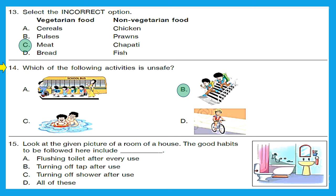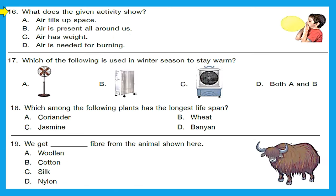Question 15: looking at the given picture of a room in a house, what good habits should be followed here? This is a bathroom. Flushing the toilet after every use — correct. Turning off the tap after every use — correct. Turning off the shower after use — correct. All of these are good habits to follow in a washroom. Option D is the right answer.